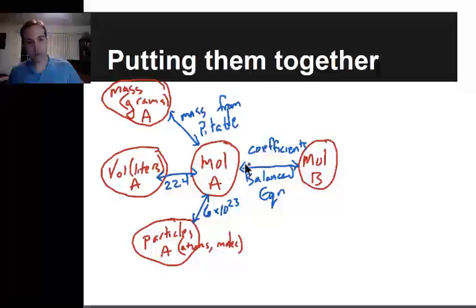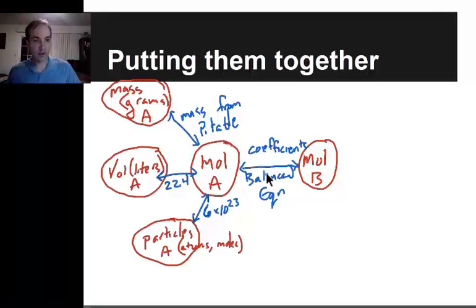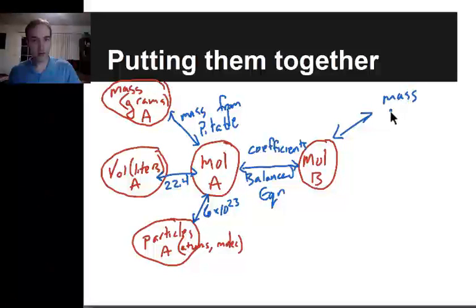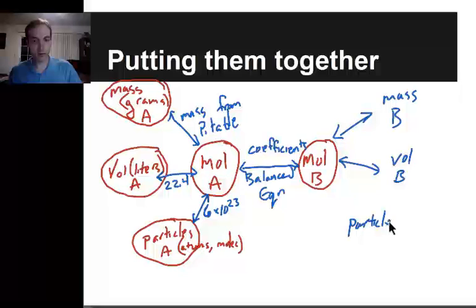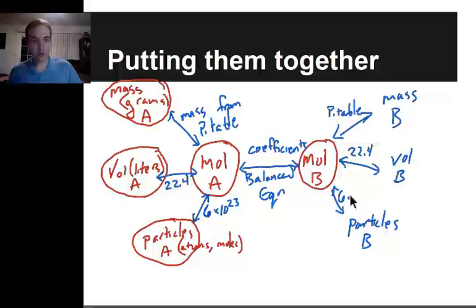For example: mass of A to moles of A to moles of B, or moles of B to moles of A to particles of A — it's two steps, meaning I have to use two different values to get there. There's also a whole other section on the B side. If I have moles of B, I could get the mass of B using the periodic table, the volume of B using 22.4, and the particles of B using 6 times 10 to the 23rd — just like the A side.